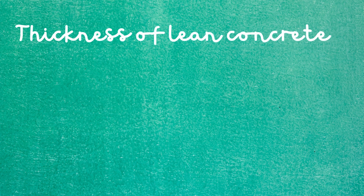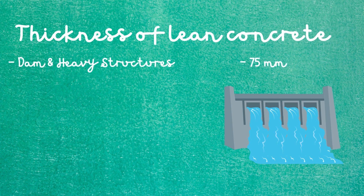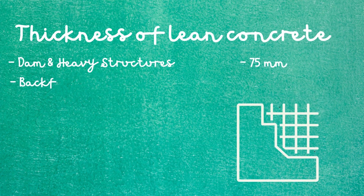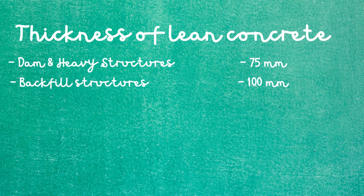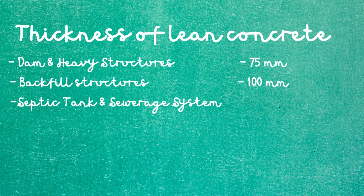Let's now see some of the recommended values of thickness for lean concrete. For dams and heavy structures with foundations on rocks, the recommended thickness is 75 millimeters. For foundations or structures that will take backfill, a greater thickness is needed, so the recommendation is 100 millimeters. For raft foundations, you can use 50 millimeters, while for septic tanks and other sewerage systems, the same thickness of 50 millimeters applies.